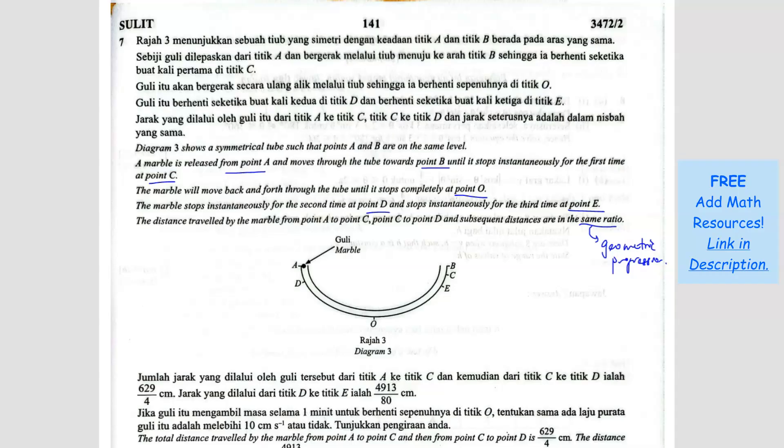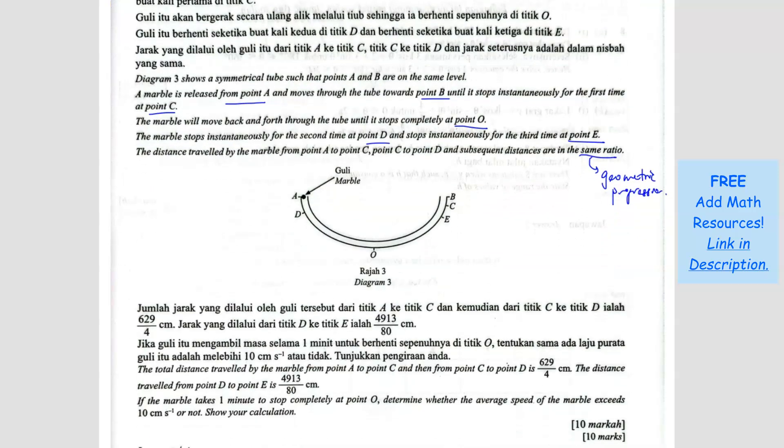So what they are trying to say is that the ball is on point A, it is going to roll and stop at point C, then it is going to go back, stop at point D, and then go back, stop at point E. So we know that A to C is the first roll, C to D is the second roll, D to E is the third roll.